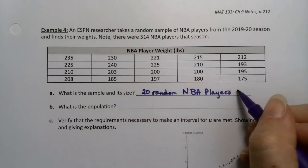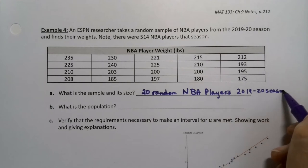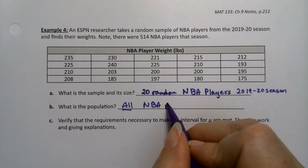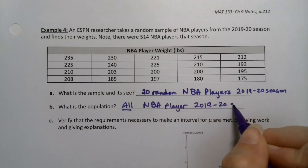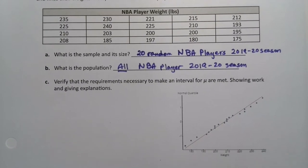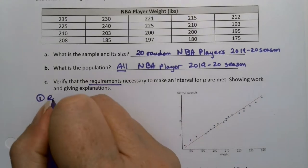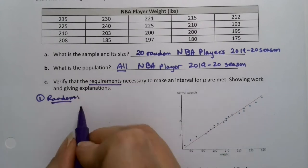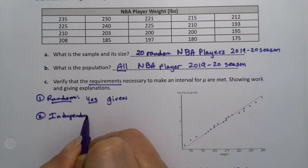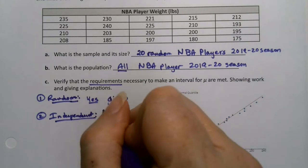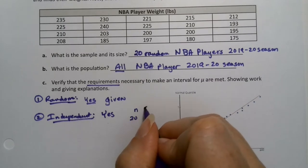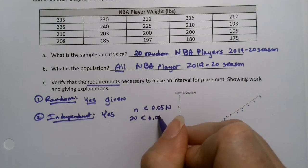Technically from the 2019 to 2020 season. And the population would be all NBA players from the 2019 to 2020 season. Now before we can even make our interval we need to verify that our requirements are met. Otherwise there's no point in doing any of this. Step one, we would need to know that it's random. This is yes because it's given. Step two, we would need to know independent. That will be of course yes.